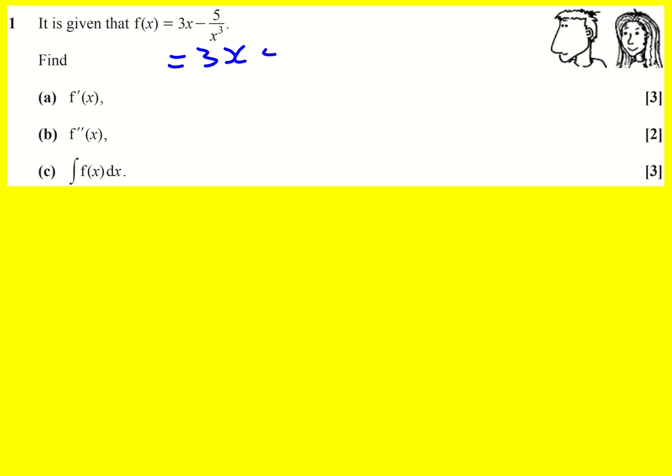So 3x is fine. This 5 over x cubed becomes 5x to the minus 3. Remember your negative powers.